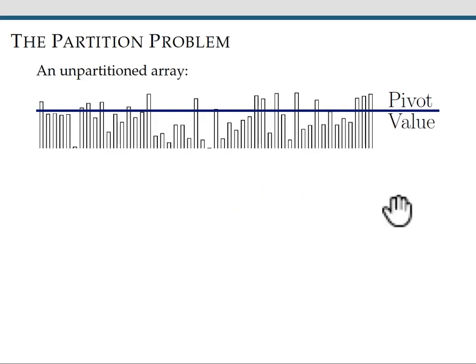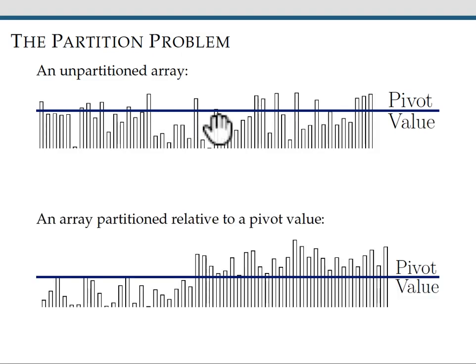The partition problem takes as input an array and a pivot value. I will represent the array with rectangles whose heights correspond to the values in the array, and I'll represent the pivot value with this blue horizontal bar. The problem is to rearrange the elements in the array so that elements less than the pivot value occur before elements greater than the pivot value.